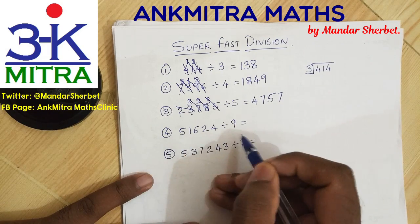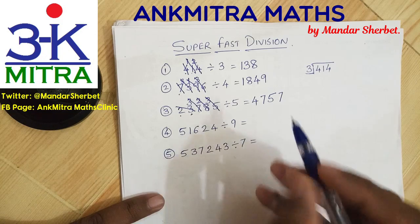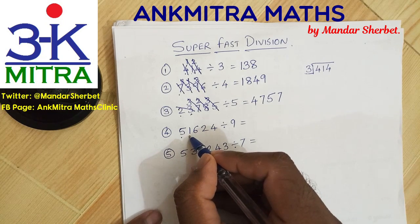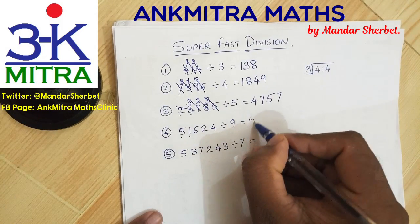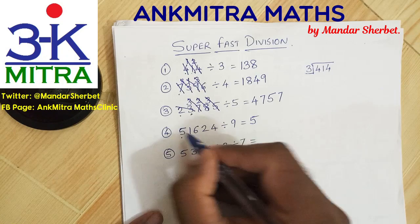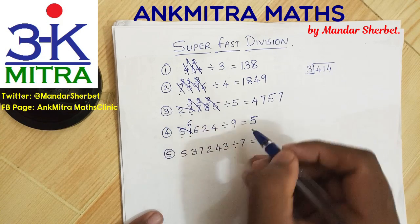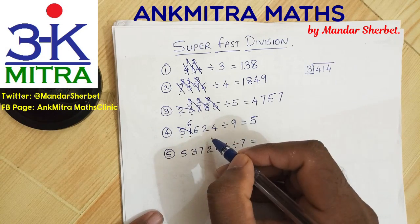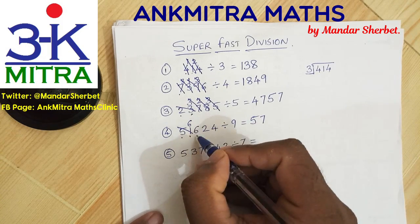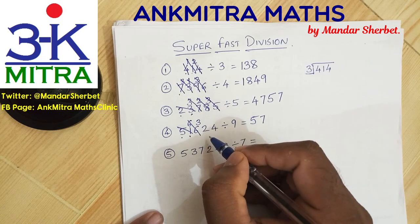Next example: the divisor is 9 this time. The number is 51624. Starting from the left, 5 is smaller than 9 so we take the first two digits, 51. 5 times 9 can be subtracted — we start the answer with 5. 5 times 9 is 45, subtracting from 51 leaves 6. So the next number is 66, and 7 times 9 can be subtracted — write down 7.